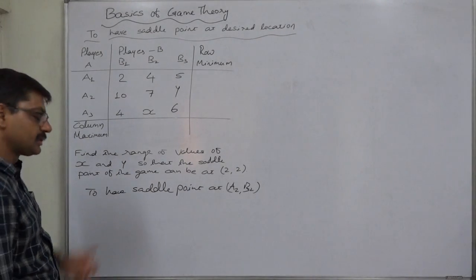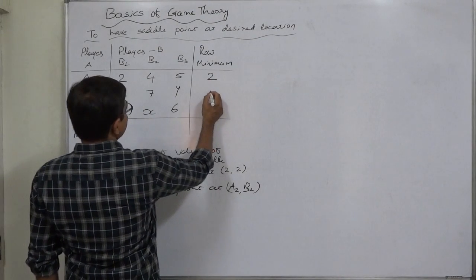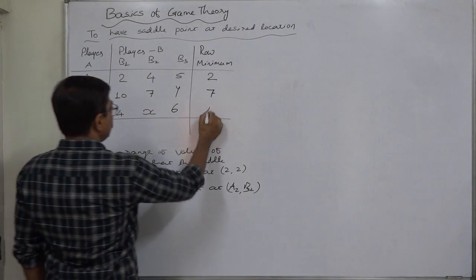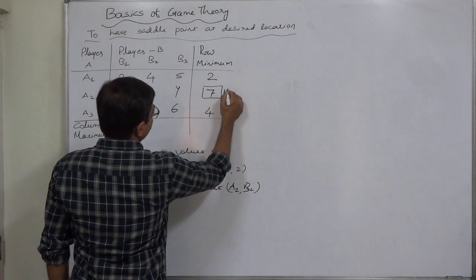Now, first of all, what is the present situation? Let's try to examine row minimum. In the first row it is two, in the second row it is seven ignoring y, in the third row it is four ignoring x. So the maximin value is seven.